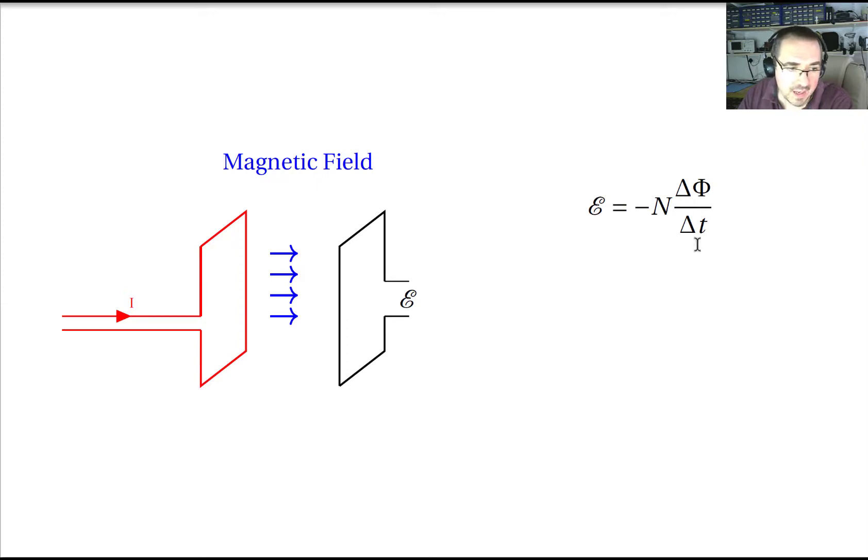Now you also have the n. n is the number of loops, so if you had another loop here you would effectively double the amount of magnetic flux passing through that circuit.